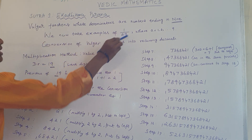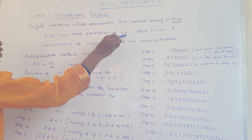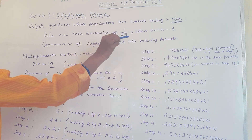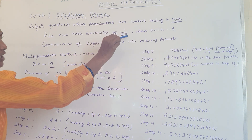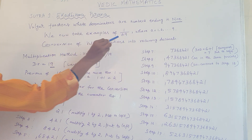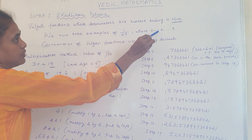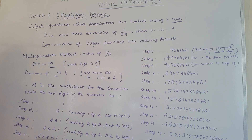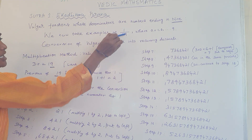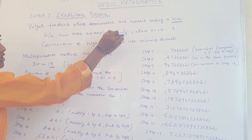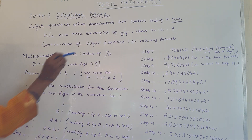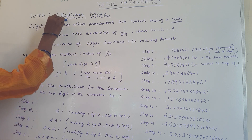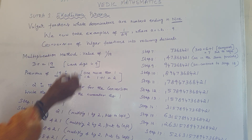The denominator should be of the form 1 by A9 — the last digit should end with 9. This A can be anything between 1 and 9: 1, 2, 3 up to 9. So if we get any vulgar fraction in this form, then we can apply the multiplication method of the Ekadhikena Sutra.